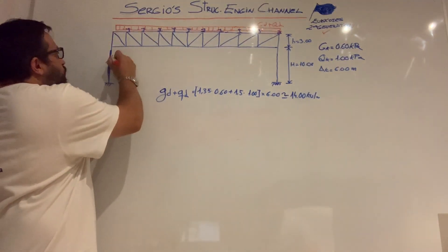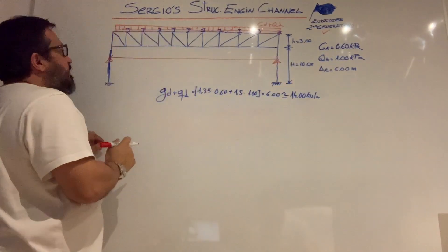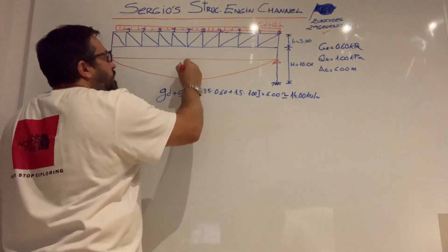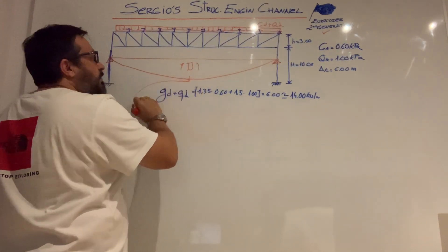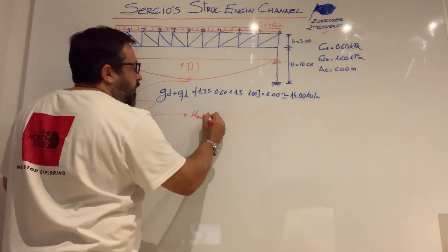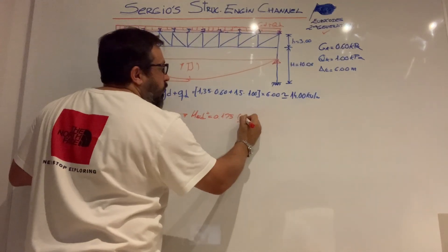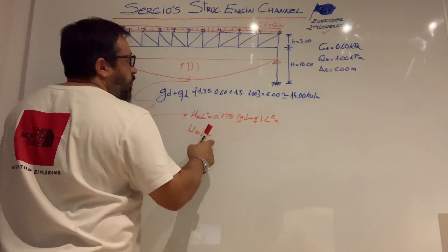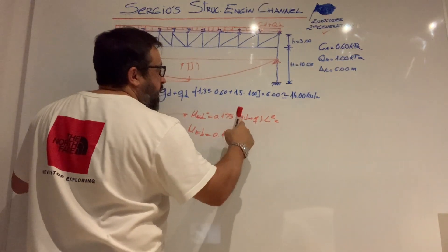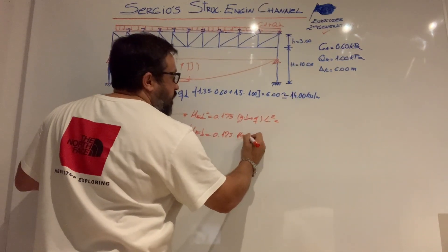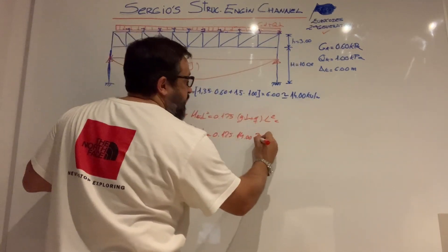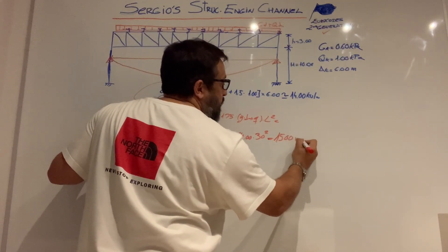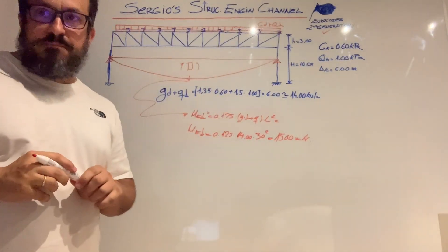To perform the structural analysis we assume the truss behaves like a simply supported beam subjected to a uniform load. We calculate the maximum bending moment using the standard equation. Working it out with the uniform load of 14 kN/m and the span of 30 meters, we achieve a maximum positive bending moment of 1,500 kNm at mid-span.